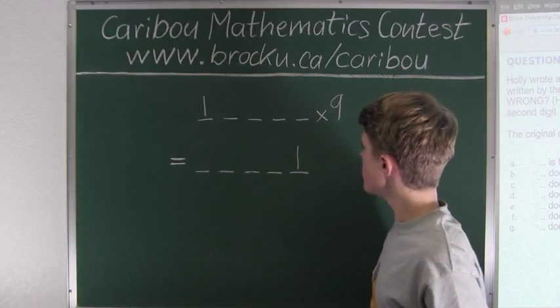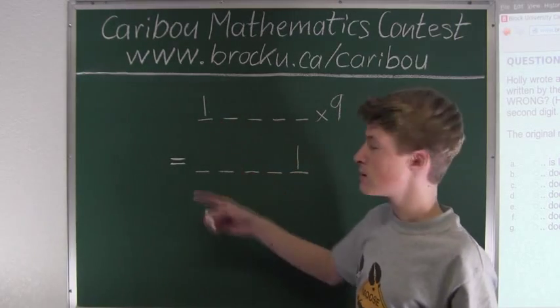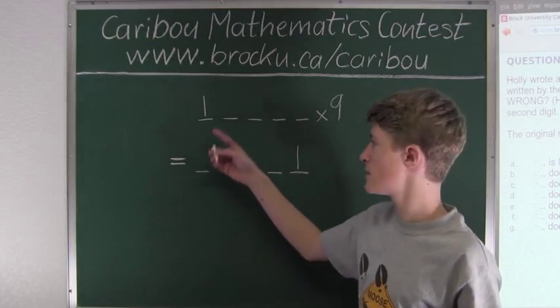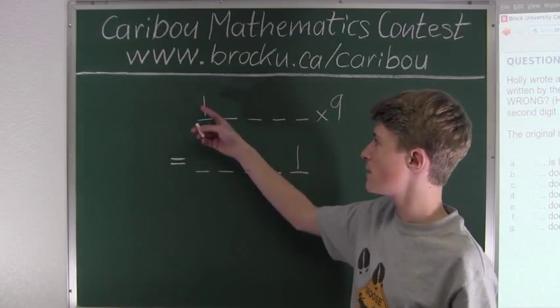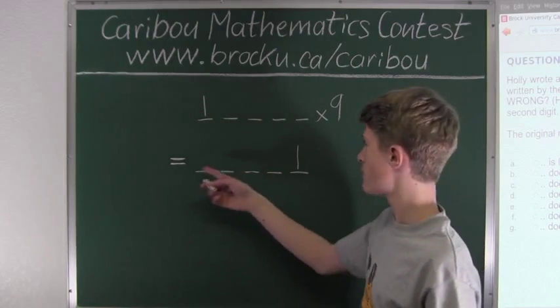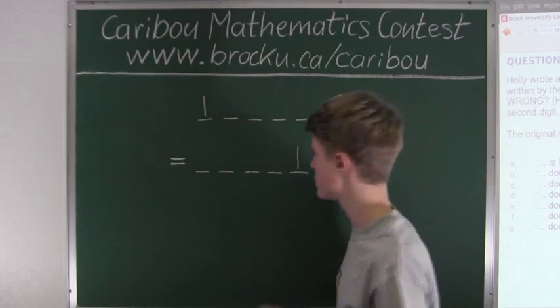We know that 9 times 1 must be 9, because we cannot have any carryovers — we only want 5 digits. So 9 times 1 is 9.